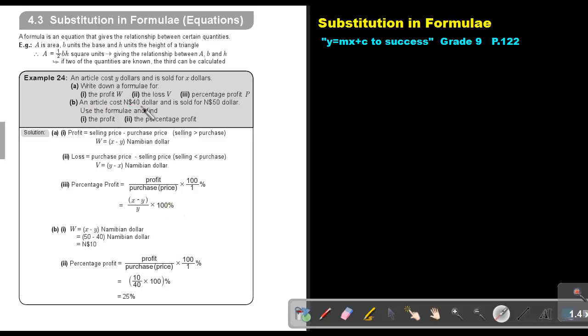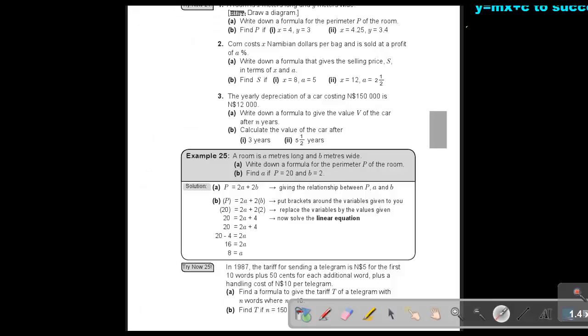Now, an article costs 40 Namibian dollars and is sold for 50 Namibian dollars. Use the formula and find the profit. So W will be 50 minus 40, which gives me 10 Namibian dollars profit. The percentage profit: put in your profit, put it over the purchase price, multiply 100%, and that gives me an answer of 25%.